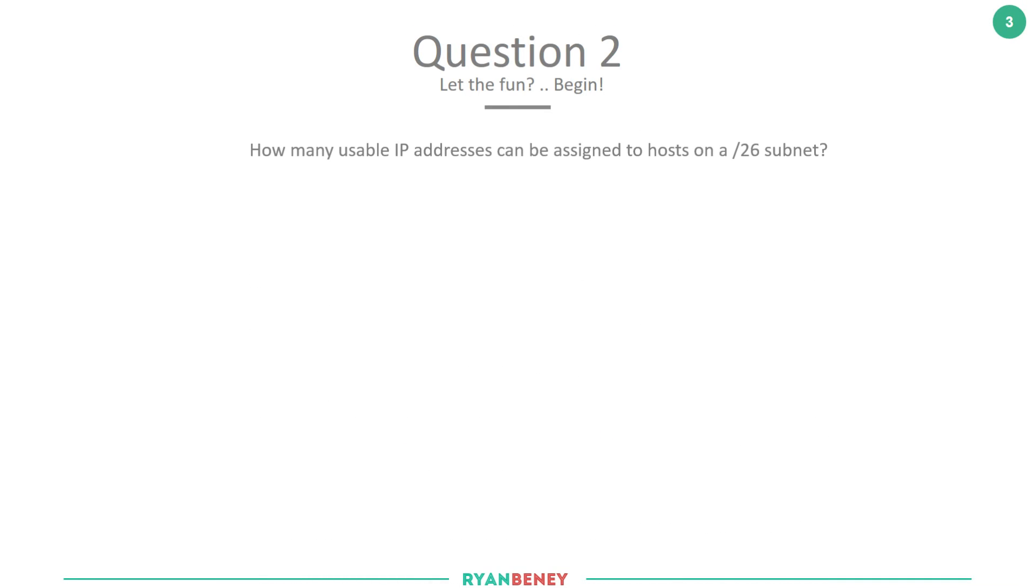Question 2: How many usable IP addresses can be assigned to hosts on a /26 subnet? Remember, this slash 26 is CIDR notation or network prefix. Options are A: 254, B: 126, C: 62, or D: 30. Pause the video, work out the answer, and then we'll go through it together.